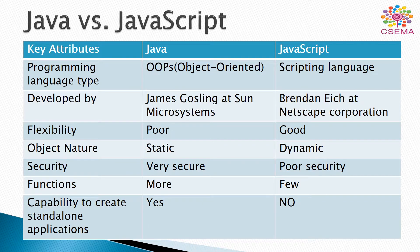Here we can list all the major differences between Java and JavaScript. The programming language type: Java is an object-oriented programming language while JavaScript is just an object-based scripting language. Java is developed by James Gosling at Sun Microsystems, and JavaScript is developed by Brandon H. at Netscape Corporation. The flexibility of Java is poor, and the flexibility of JavaScript is better than Java.